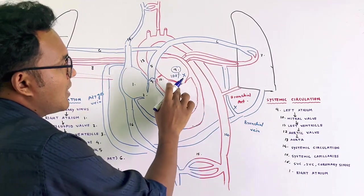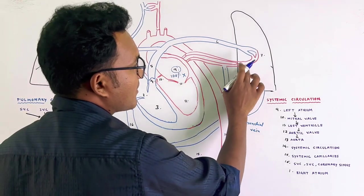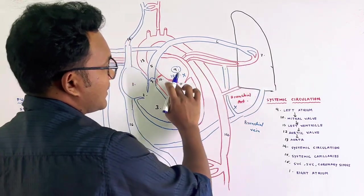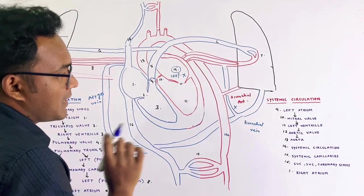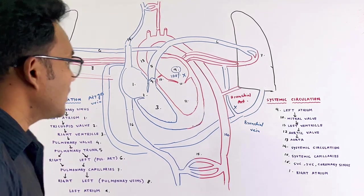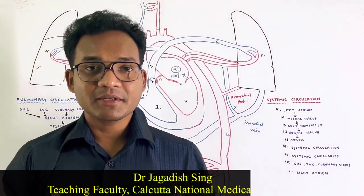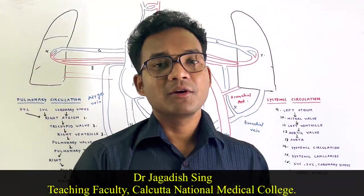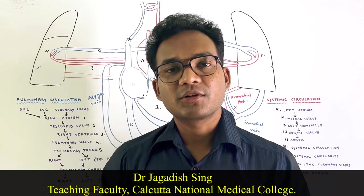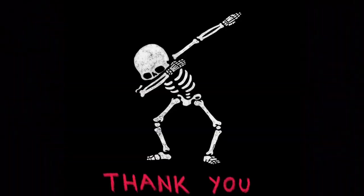From the end of the pulmonary circulation, you can expect nearly 100% oxygen in the blood. That is the overview of systemic circulation and pulmonary circulation. Thank you.